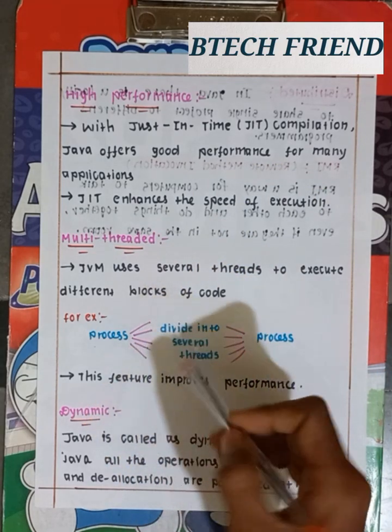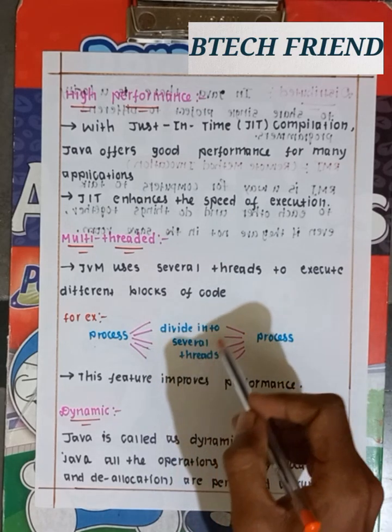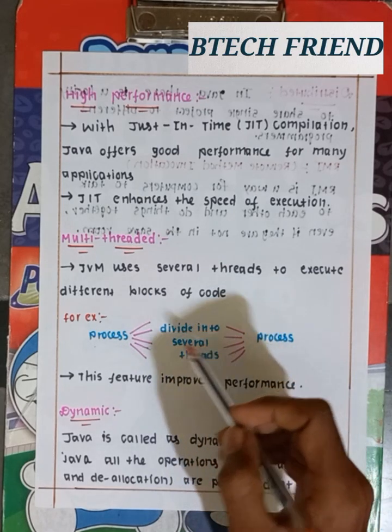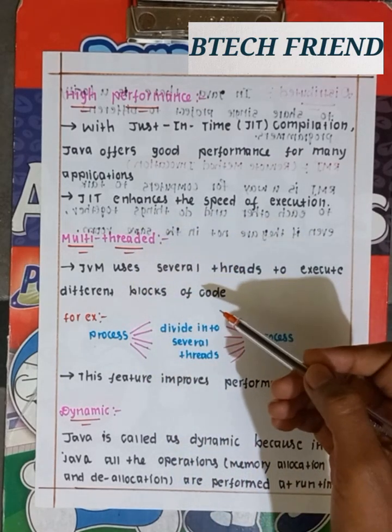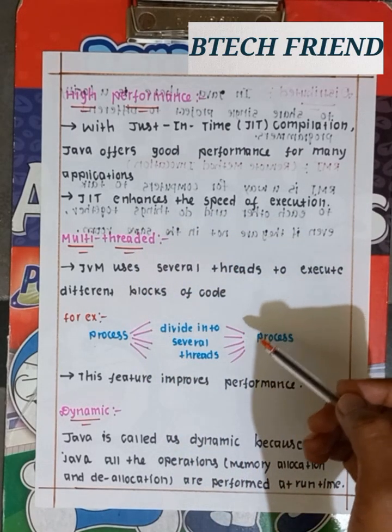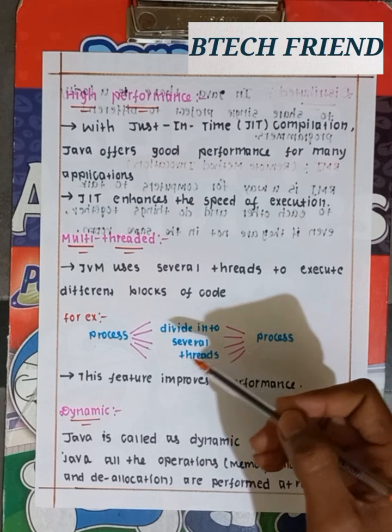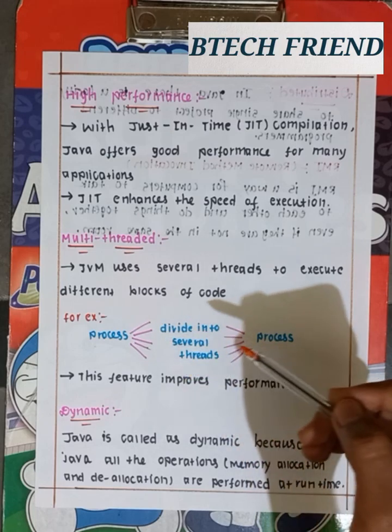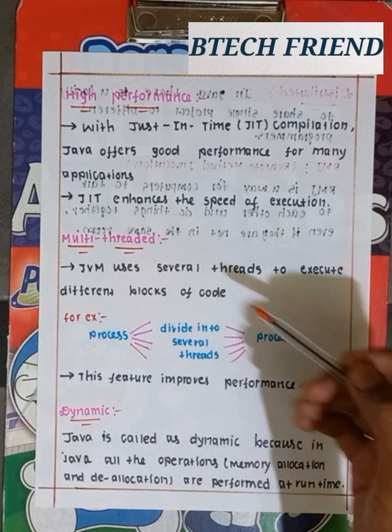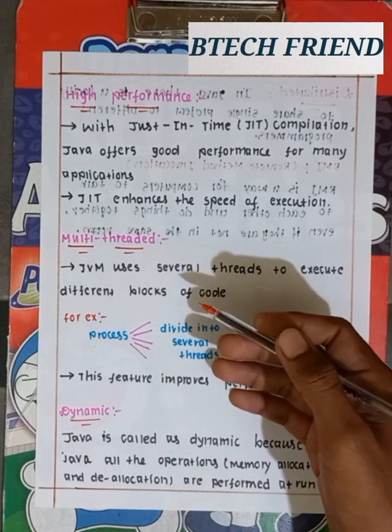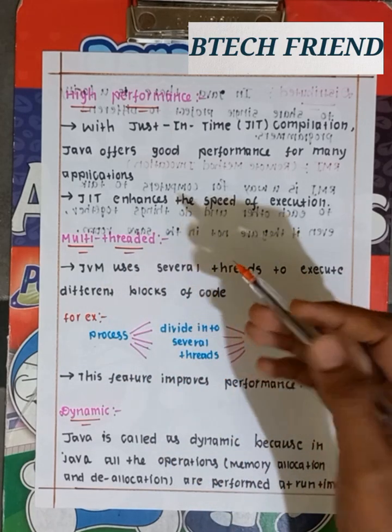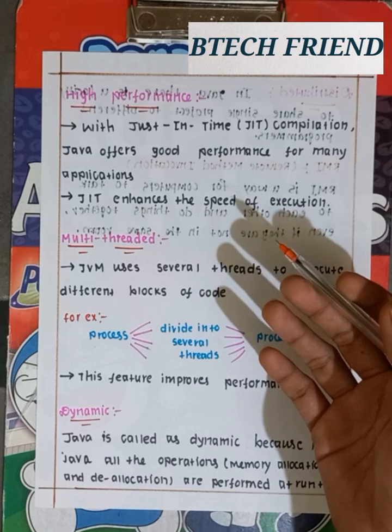Multi-threading means the process is divided into all parts and executed in parallel. This improves performance and increases the execution speed.